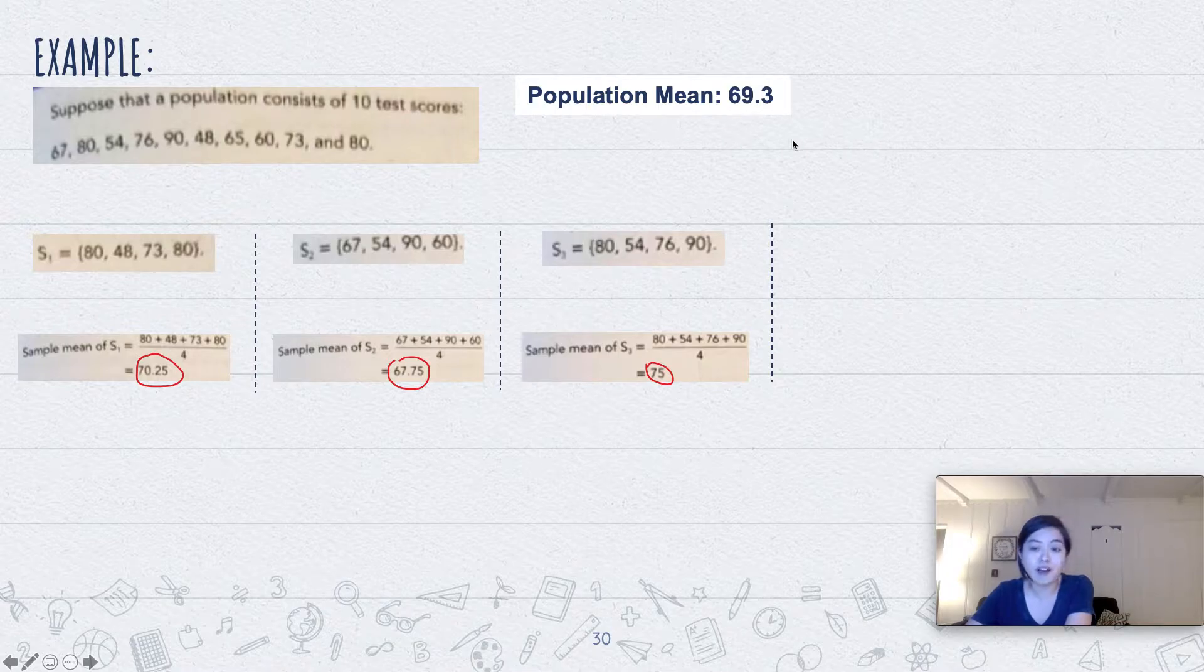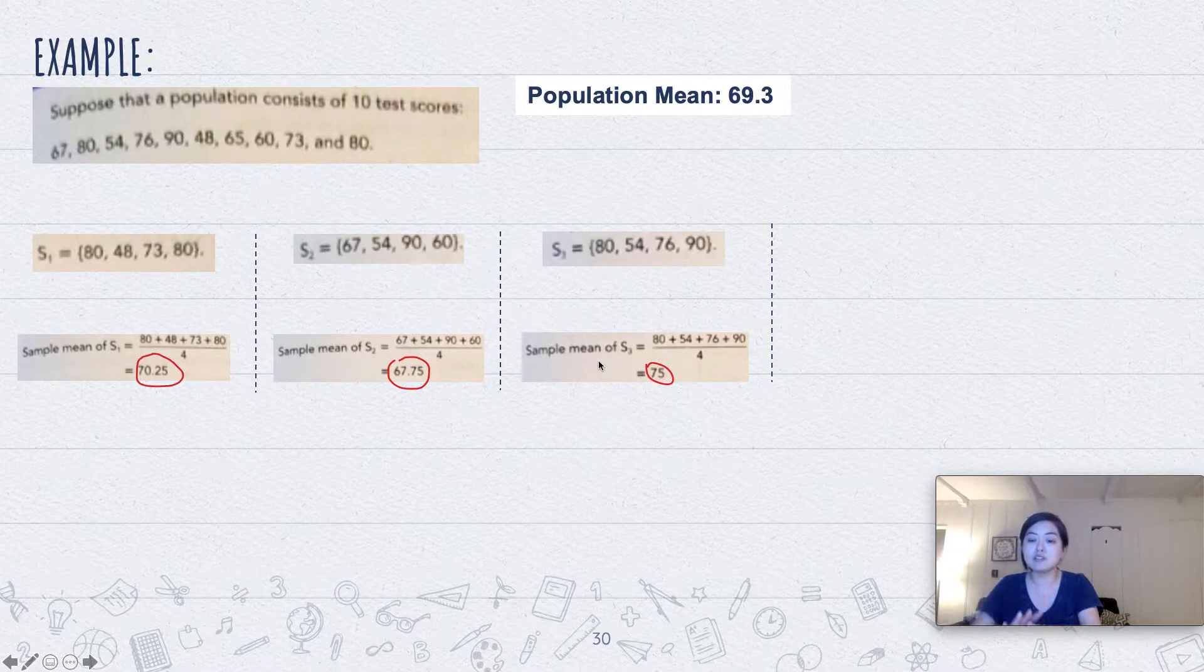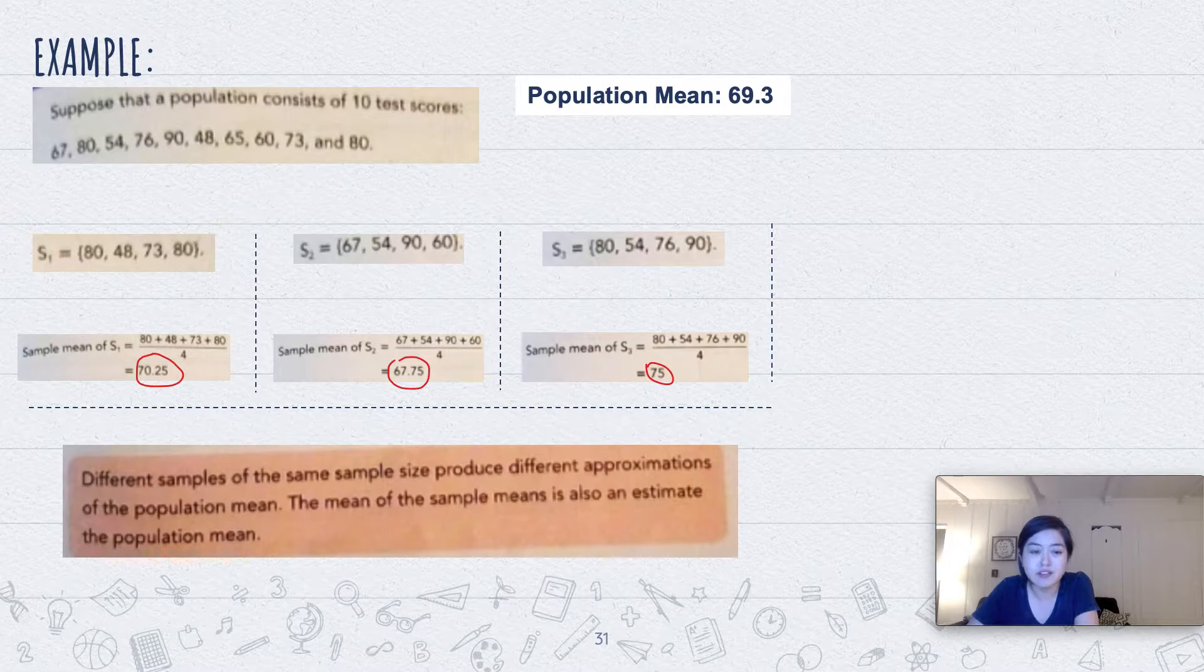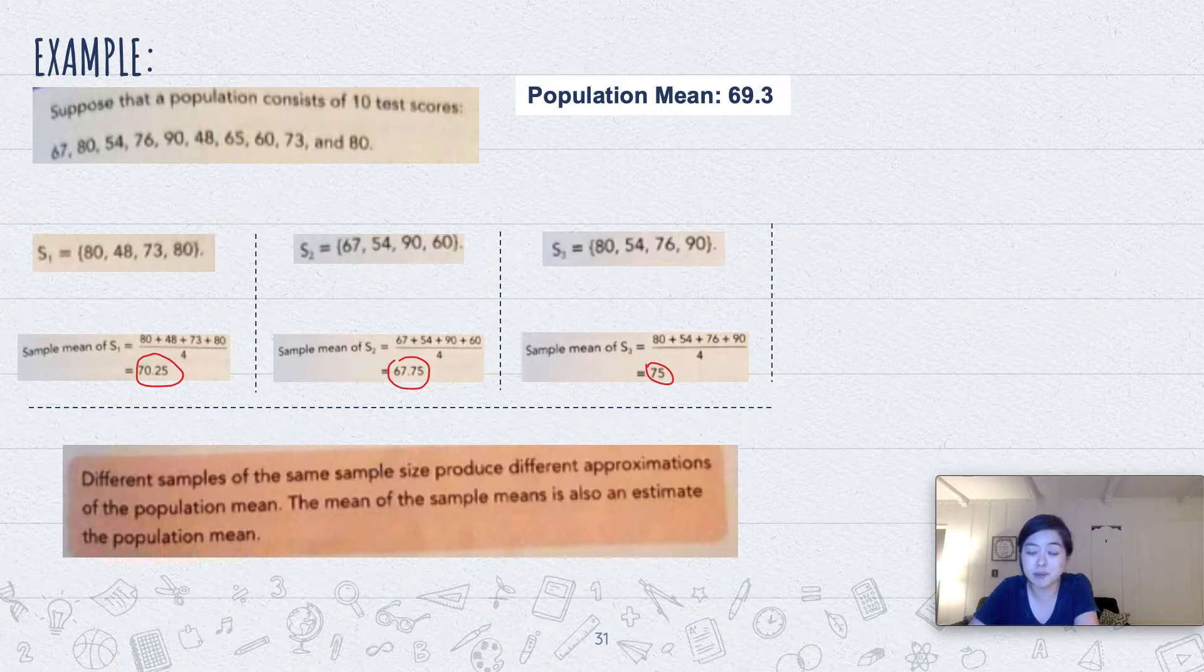No, they're not. That's why sample means are an approximation to the population, and different samples of the same sample size produce different approximations of the population mean. The mean of the sample mean is also an estimate of the population.